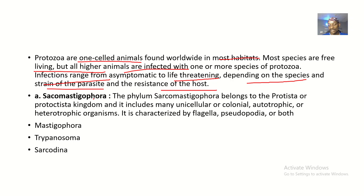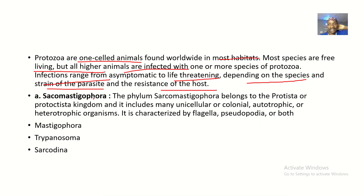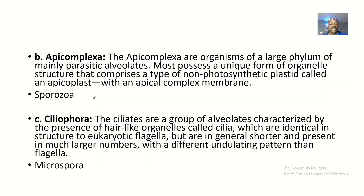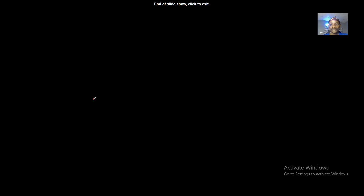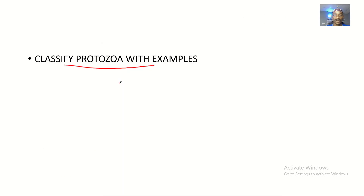The classifications of protozoa are: the first one is Sarcomastigophora, the second one is Apicomplexa, and the third one is Ciliophora. There are pictures of each one of them — this here is Apicomplexa.